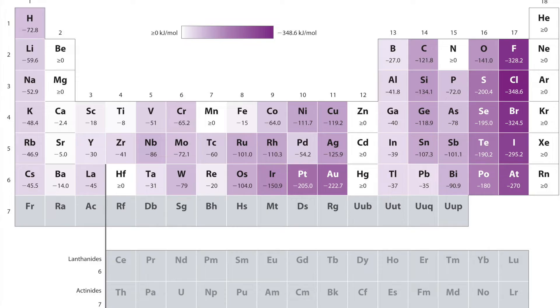For example, this is why we see a decrease in energy in group 5A, because it already has a half-filled p orbital. It is important to note that most groups — these are your columns — do not have a defined trend as you move down.